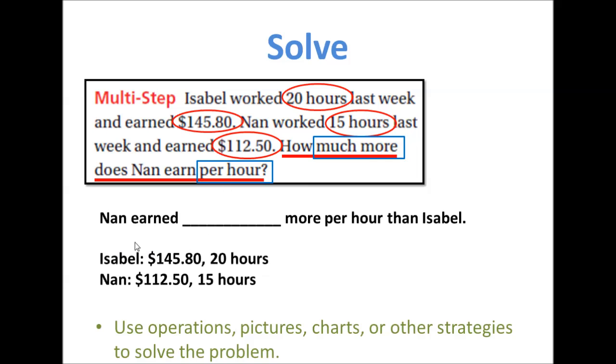So here is what I put in the planning stage. Isabel earned $145.80. She worked 20 hours. Nan earned $112.50. She worked 15 hours. I don't care that it was last week. I don't even actually care about their names but I put them there to tell the difference between them. Only the vital and important information is here and all the fluff is gone.